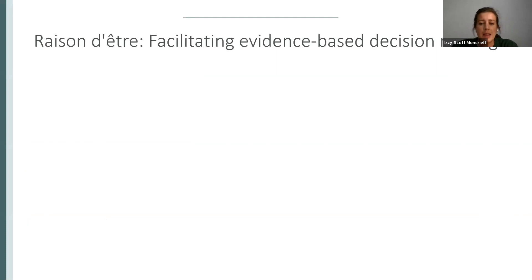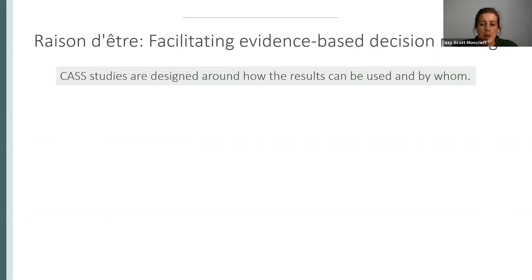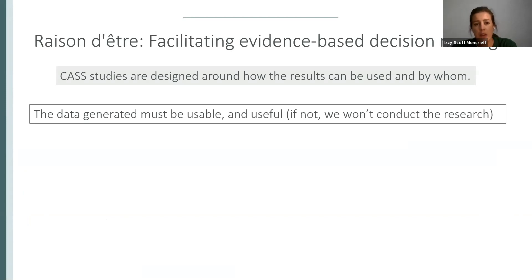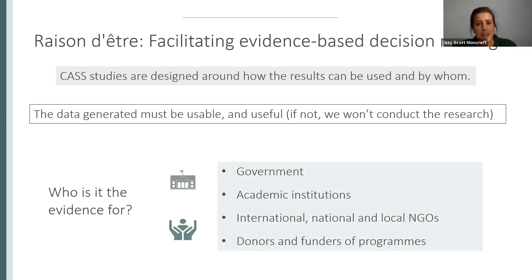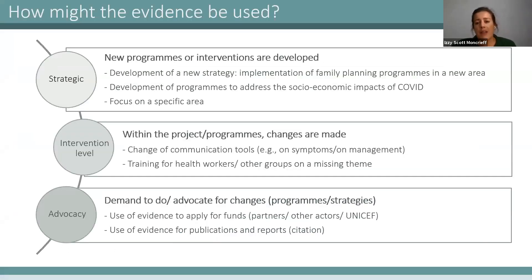The CAS exists to facilitate evidence-based decision making. It's a bottom-up approach to improve the likelihood of programs actually working and having an impact. Research is defined around how results can be used and by whom — if we can't see data being used or usable, we won't conduct the research. Evidence is generated for government, the Ministry of Health, academic institutions, NGOs, and donors, and it's not just about using evidence for programs but also to influence funding, policy, and strategy.